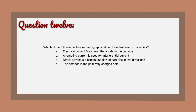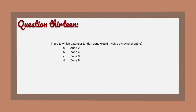Question 12: Which of the following is true regarding application of electrotherapy modalities? A) Electrical current flows from the anode to the cathode. B) Alternating current is used for interferential current. C) Direct current is a continuous flow of particles in two directions. D) The cathode is the positively charged pole.